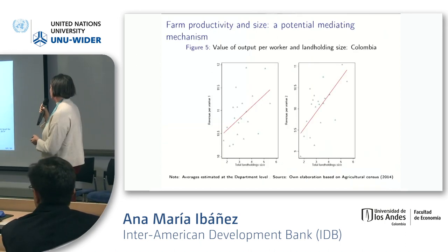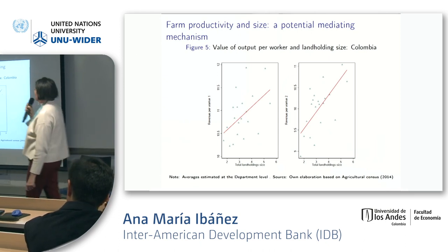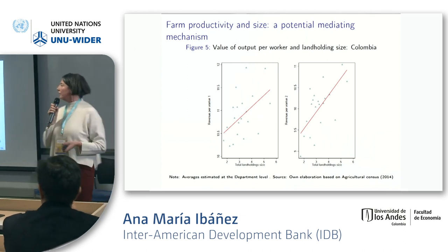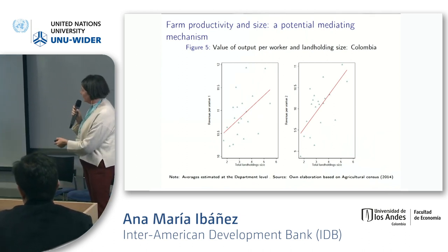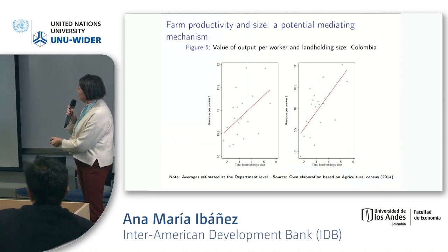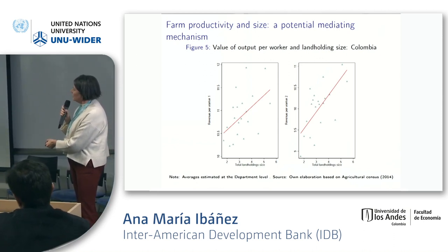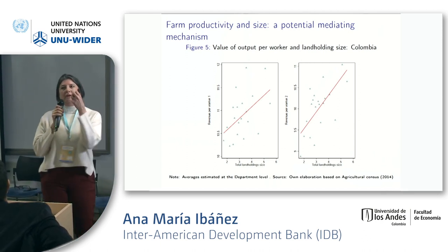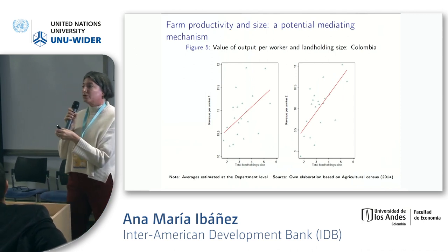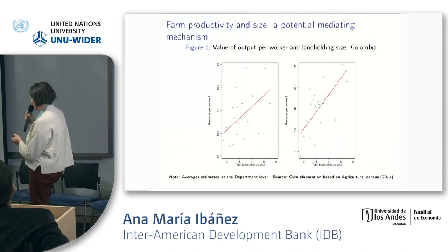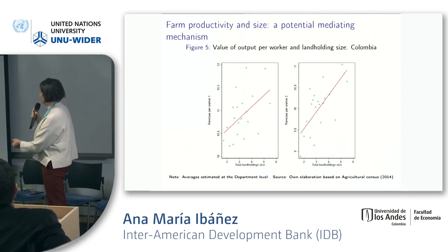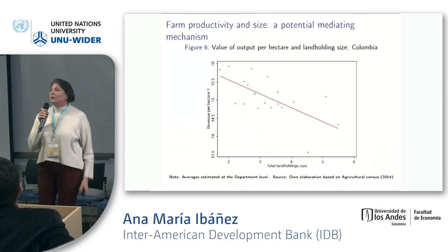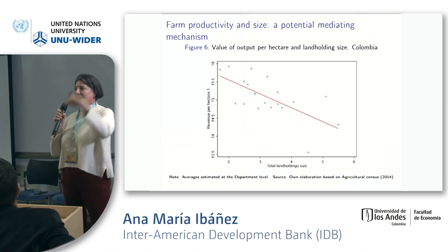Of course, we have to go much more into detail. One of the mediating mechanisms — and this is only for Colombia because we had access to the census just a few months ago — when we relate farm size to the value of output per worker, the relation is quite strong. In departments where farm size is larger, the productivity per worker is higher, defined in two different ways. However, when we do it per hectare, we find a negative effect.